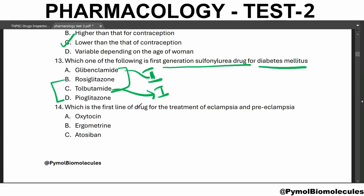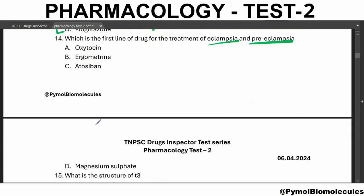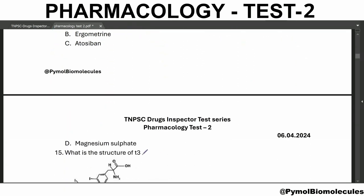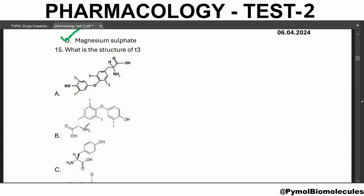Which is the first-line drug for the treatment of eclampsia and preeclampsia? It is magnesium sulfate. What is the structure of T3? T3 is triiodothyronine, so there are three iodine molecules.